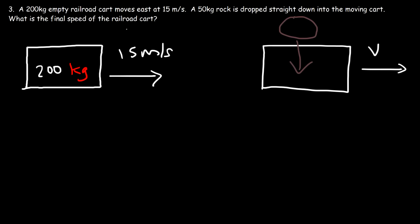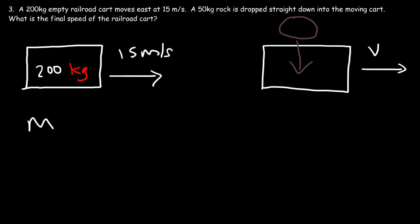The momentum of the cart in the x direction is fixed. The rock is moving in the negative y direction, so it's not going to affect the momentum of the cart in the x direction. So momentum is conserved. If momentum is constant and mass increases — in this case by adding the rock — we should expect the speed to decrease. Our answer should be less than 15.